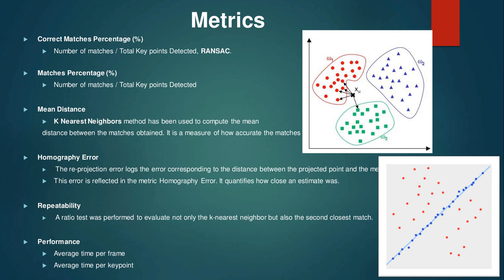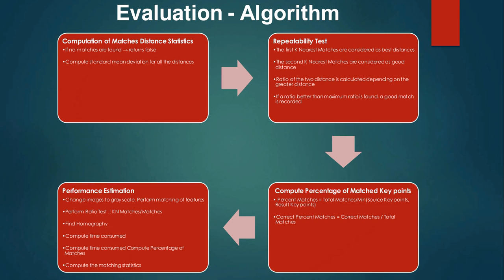This is the algorithm used for evaluation. We first compute the match distance statistics — if no matches are found, there is no match distance; otherwise we compute the standard mean deviation for all distances. The repeatability test considers the first K-nearest neighbors as the best matches and the second K-nearest neighbors as good matches. A distance ratio is calculated, and if a ratio better than the maximum ratio is found, a good match is recorded.